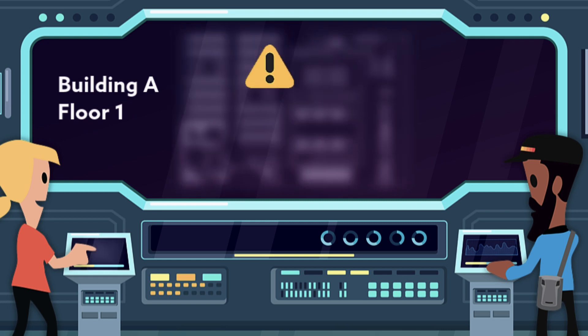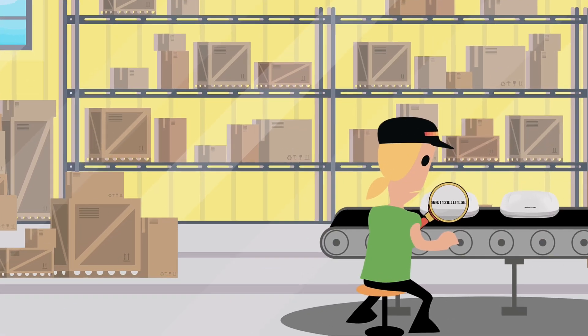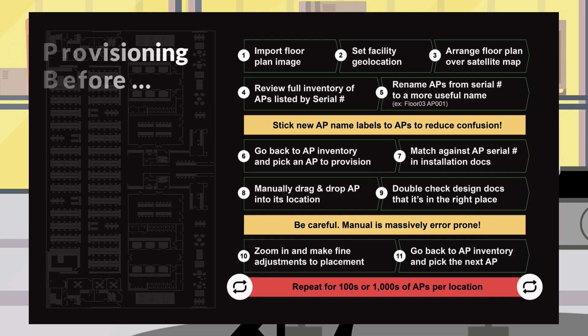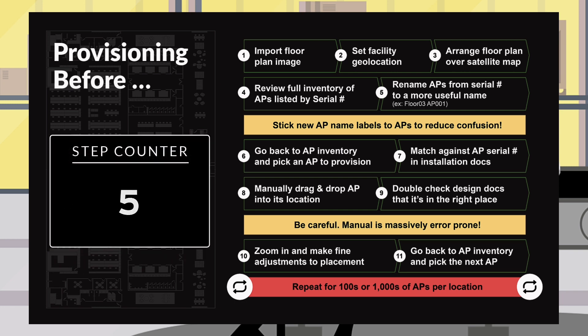It relies entirely on a manual provisioning process of matching APs from your inventory list against their serial number and the install dock, dragging and dropping an AP onto the floor plan, double checking that it's in the right spot, zooming in, making adjustments, all of this one by one.